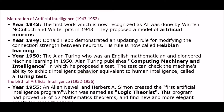The maturation of artificial intelligence spans 1943 to 1952. In 1943, the first work now recognized as artificial intelligence was done by Warren McCulloch and Walter Pitts. They proposed a model of artificial neurons. In 1949, Donald Hebb demonstrated an updating rule for modifying the connecting strength between neurons, and his rule is now called Hebbian learning.